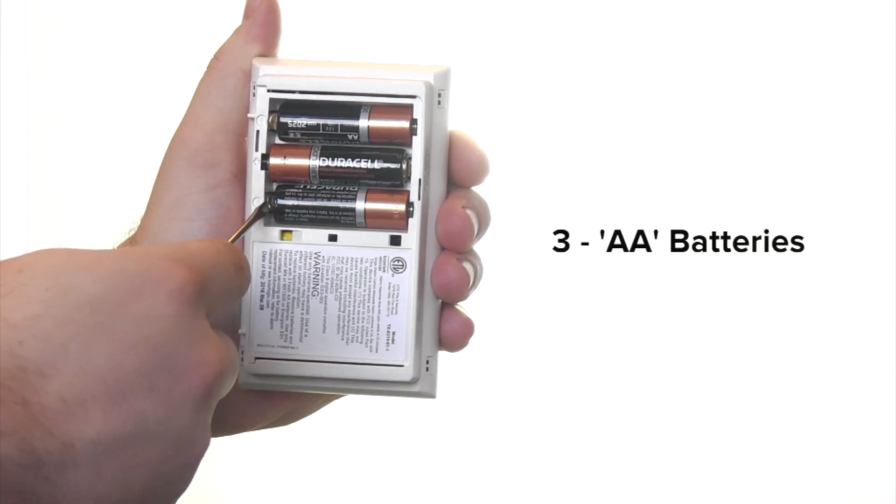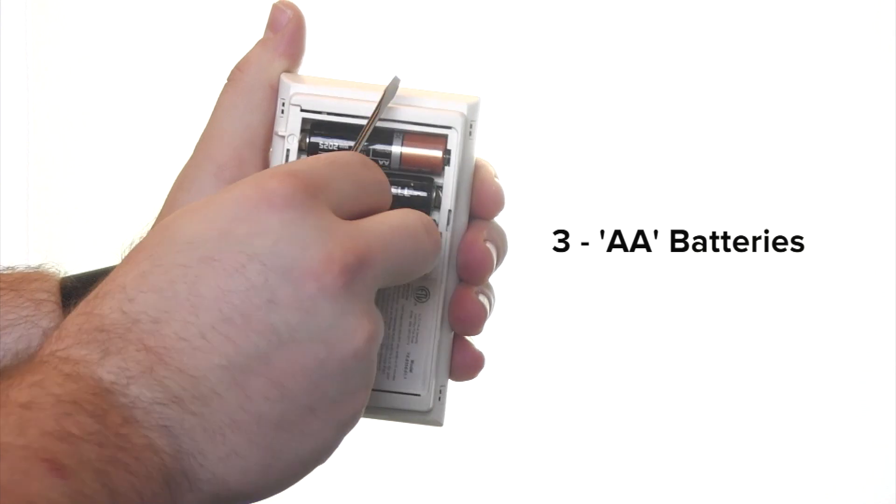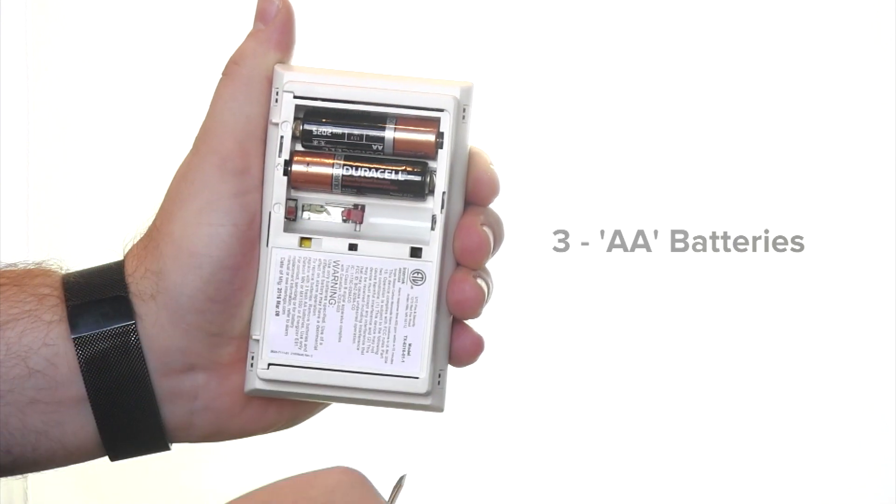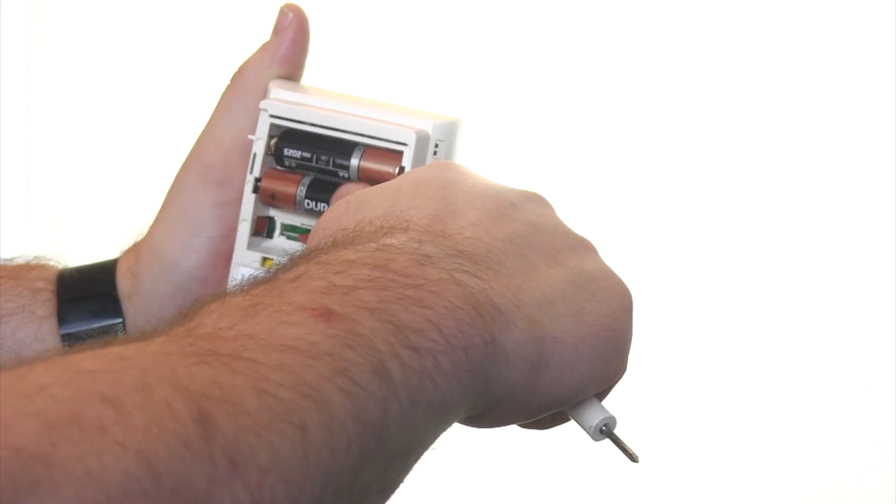Using a flathead screwdriver, we're able to pop those batteries out. You'll also notice that there is a red bar that pops out once the batteries have been removed.